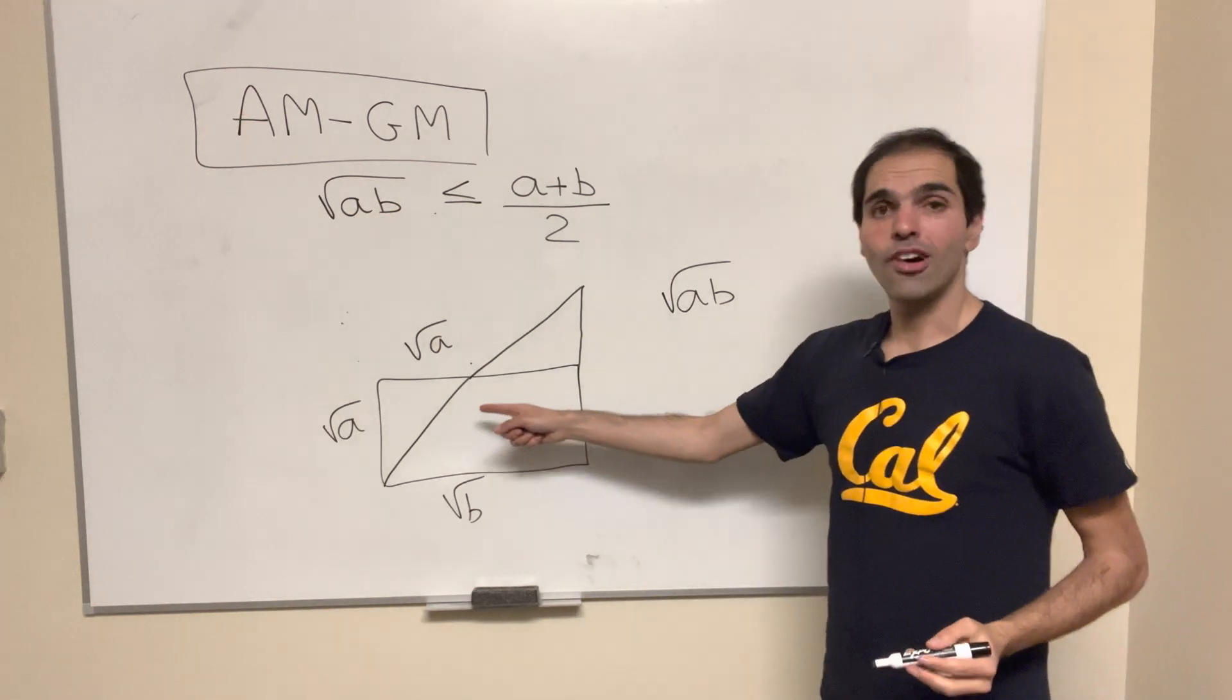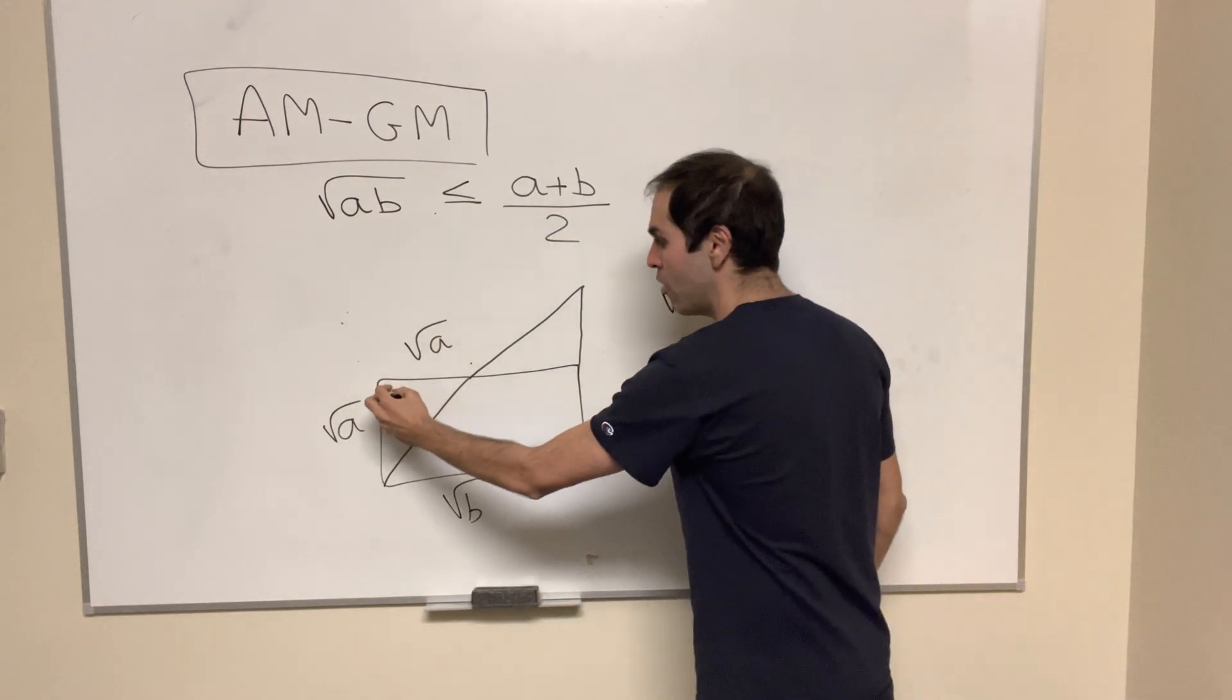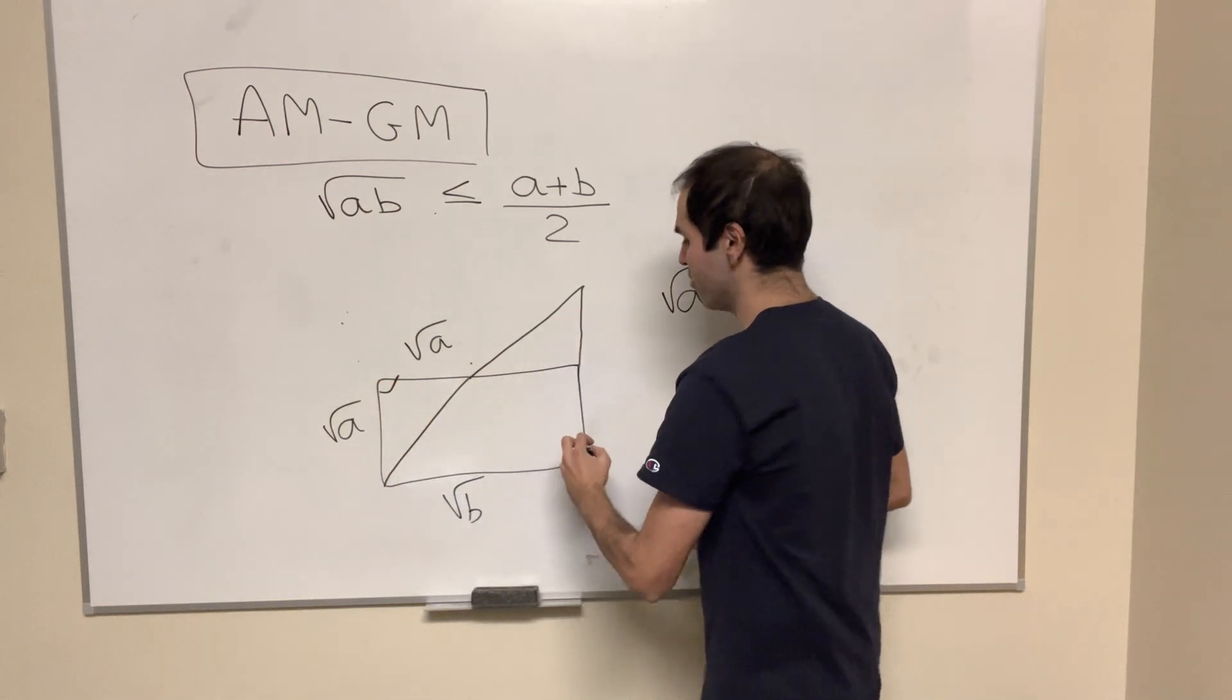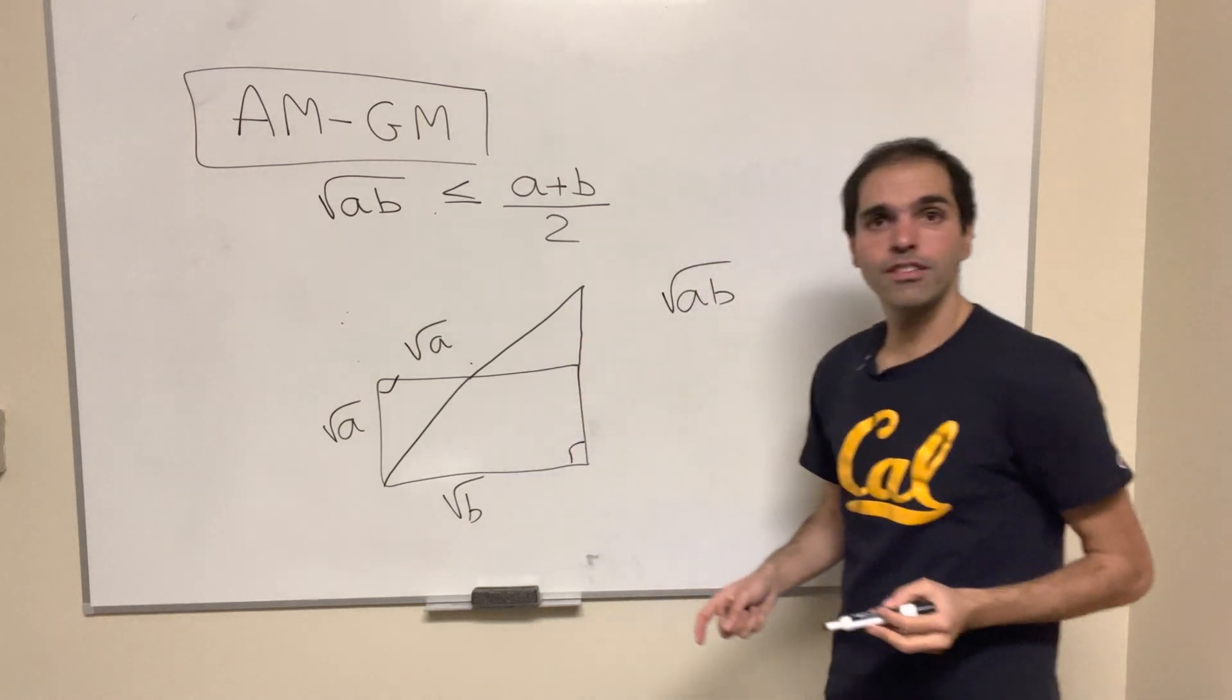Notice the following. This triangle has angles 90, 45, 45, but so does this triangle, 90, 45, 45.